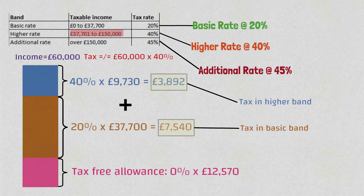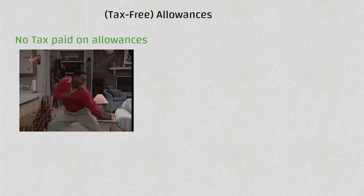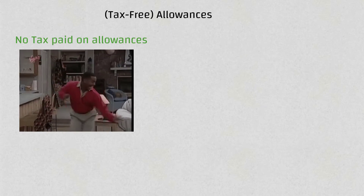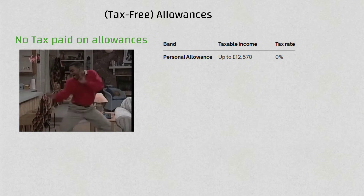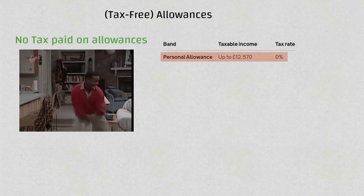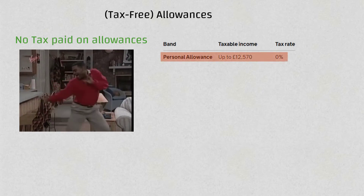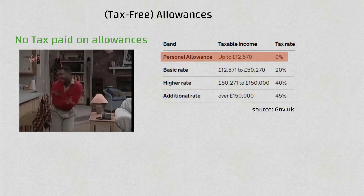However, in the previous example I didn't discuss allowances. Allowances are basically an amount which is exempt from tax. Most of us have a personal allowance of £12,570, which means for the first £12,570 of your salary that's tax free. If you earn less than that, you pay zero tax.